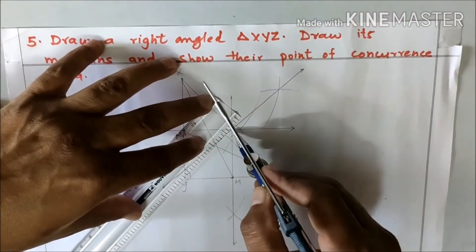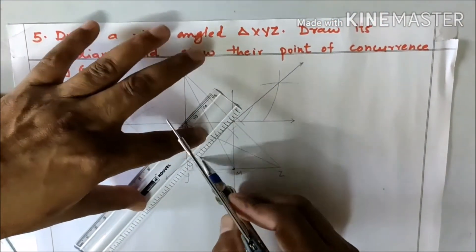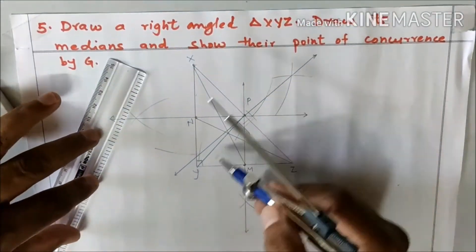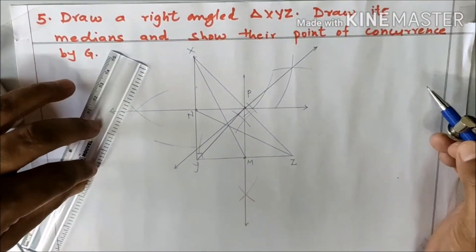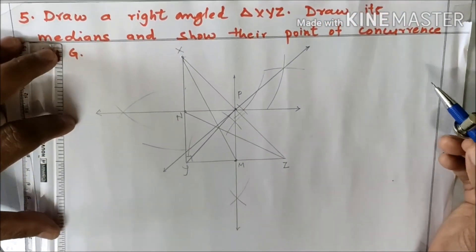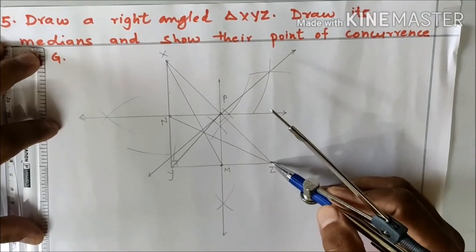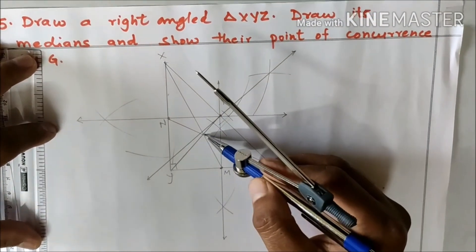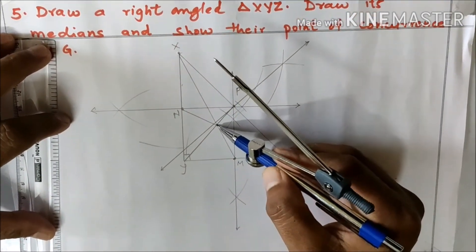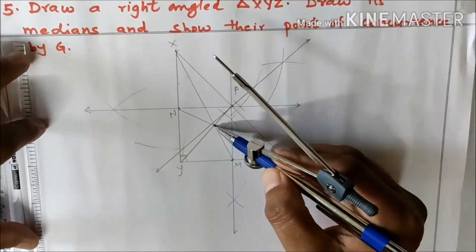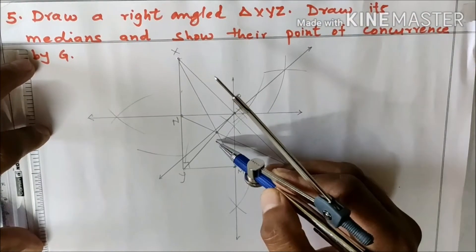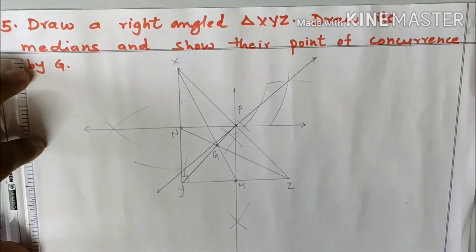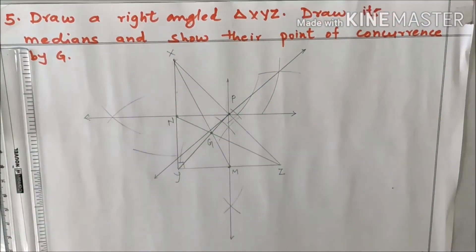Now we will join midpoint P with corner Y. So YP is another median of this triangle. You can see that all three medians meet each other at this point, and this point is called the centroid of the triangle, that is point G.